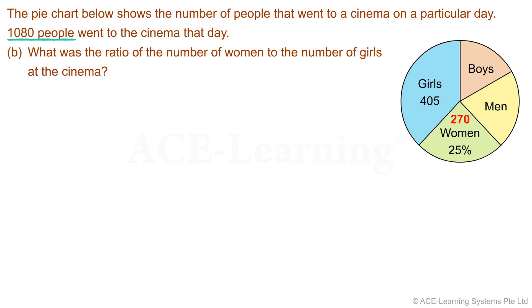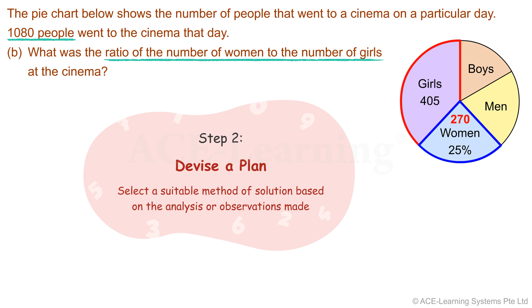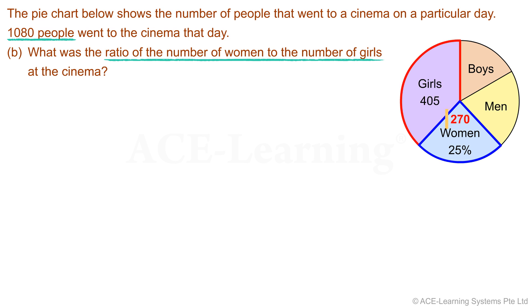Let us now look at the next part of the question. We are required to find the ratio of the number of women to the number of girls. From the pie chart, the number of girls is given, and we have already found the number of women in the first part. Step 2: Devise a plan. The number of women is 270, and the number of girls given in the pie chart is 405.